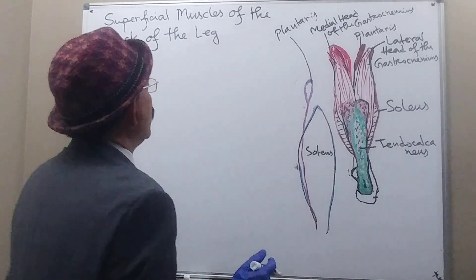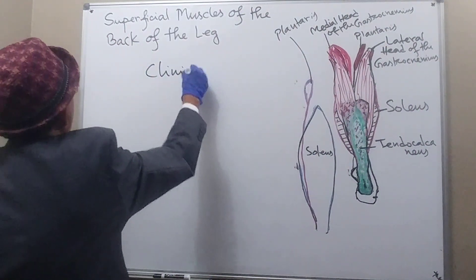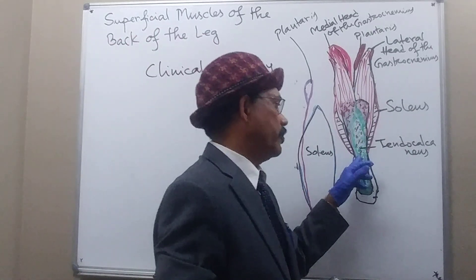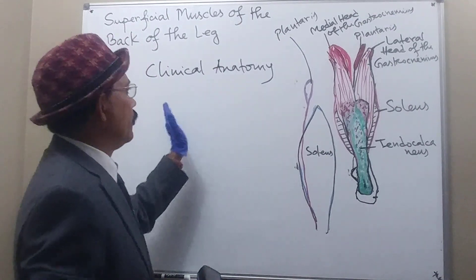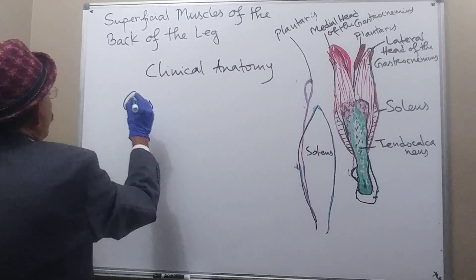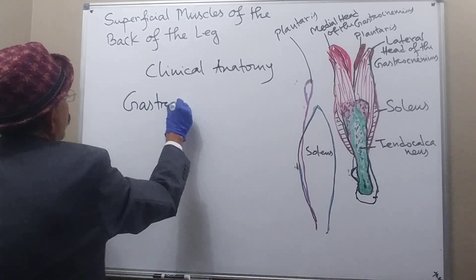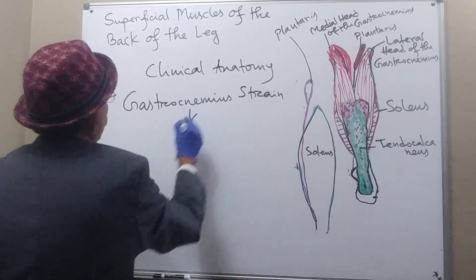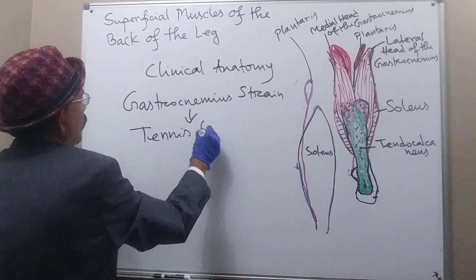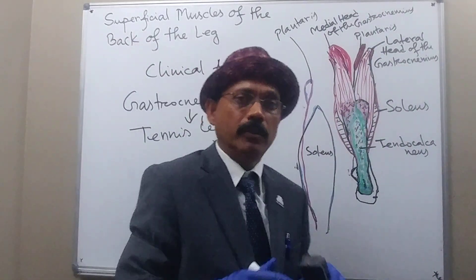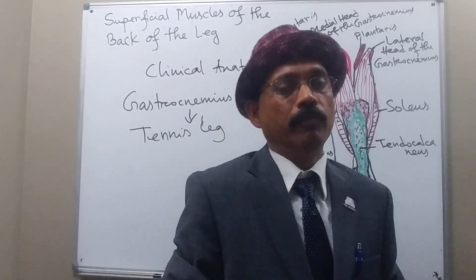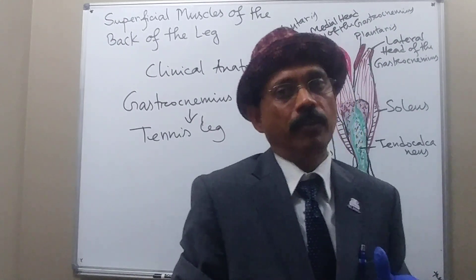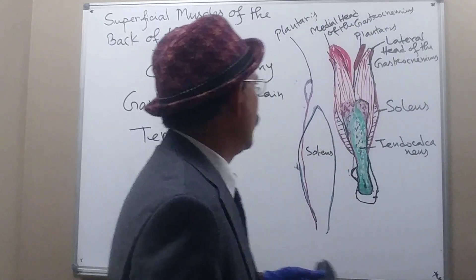Now for clinical anatomy: the tendo Achilles may be cut, ruptured, or develop tendinitis. Regarding the muscles, we may have gastrocnemius strain — especially in what we call 'tennis leg.' This occurs in unconditioned individuals, often over age 40 or younger athletes who suddenly start very active sports without prior conditioning.